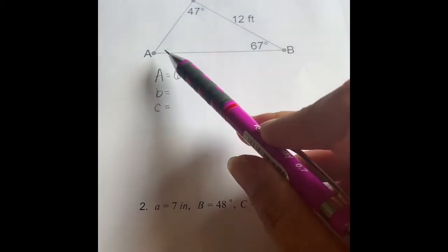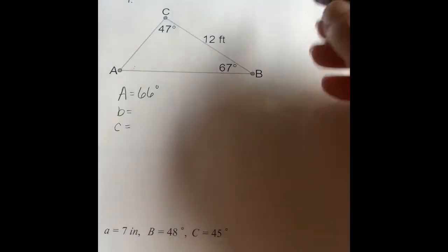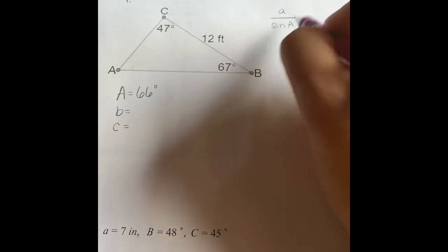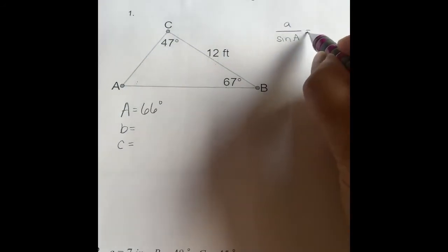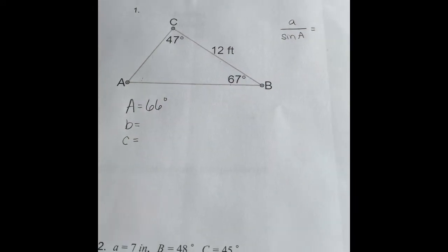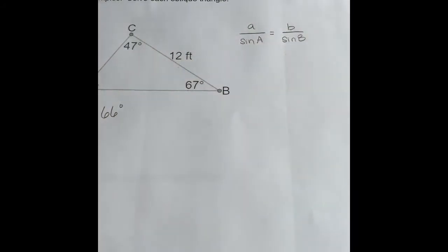Now we know both angle A and side A. So using the law of sines, we can use side A over the sine of angle A. So we know that's one of the fractions we're going to use. Now, if we wanted to find side B, then we are going to use the fraction that involves B. So we're going to use side B over the sine of angle B. So these are the two fractions we're going to use first to help us find side B.